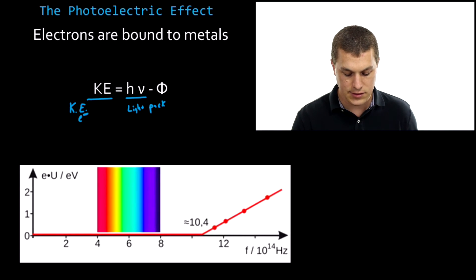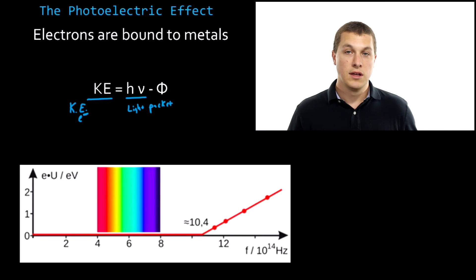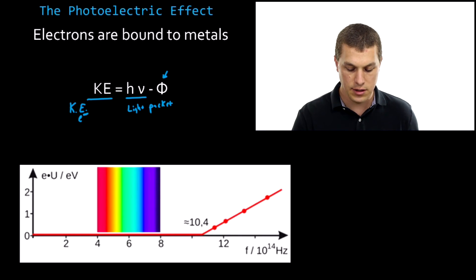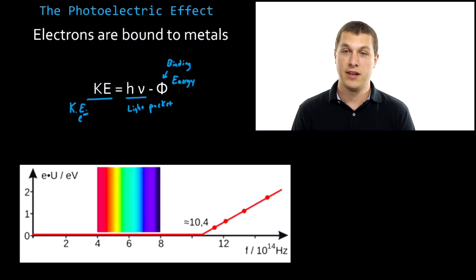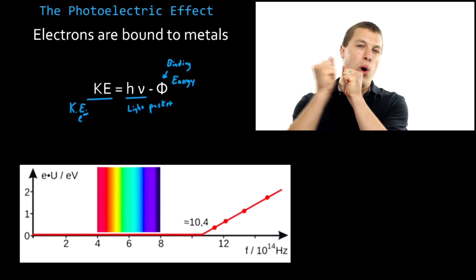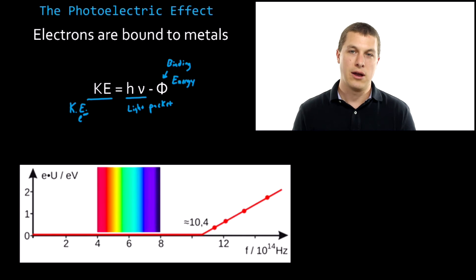And if the light packet has a certain amount of energy, well, some of it goes into pulling off that electron. And that's what this is right here, the binding energy. So basically, what that's telling us is that if I want to think about how much energy my electron has, I take how much energy the light I put in has, and subtract out that energy that's holding that electron down onto that metal.